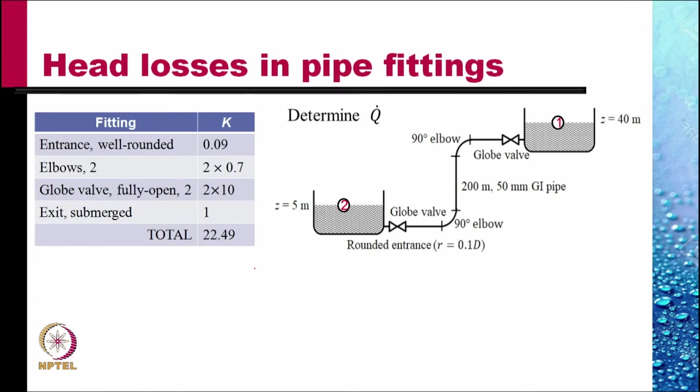We determine the summation k for the minor losses. We have a well rounded entrance that is given to us. So, the value of k is 0.09 from the table. There are two large radius elbows. Each elbow has a coefficient of 0.7. So, for two elbows equal 2 into 0.7. We have two fully open globe valves each with k equals 10 and a submerged exit and if we assume the flow to be turbulent the value of k is 1. Summation k then would be 22.49.